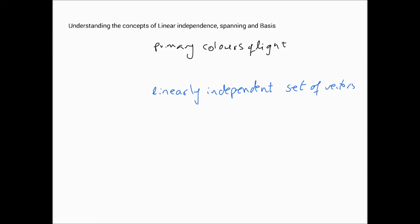But here's the important thing: this is not an electronics or physics class — we're using this as an analogy. So think of it this way: if you have a red source, a green source, and a blue source, and you take K1 amount of red, add it to K2 amount of green, and add it to K3 amount of blue, you can — by changing these Ks — produce any color.